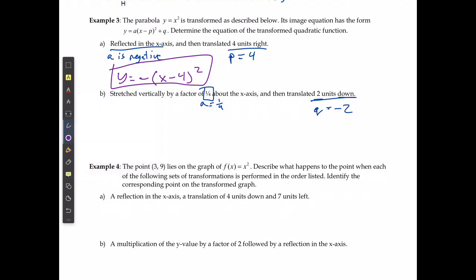So I'm going to state that y equals 1 over 4. I don't need to do the brackets because p is 0, so I can get rid of the x minus 0 squared and just say x squared, and then just include the q value at the end, minus 2. And there it is.